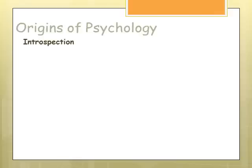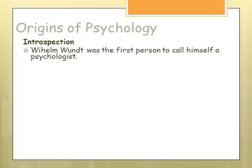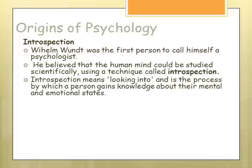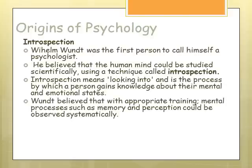Origins of psychology. Introspection was when psychology started to emerge, developed by Wilhelm Wundt, who was the first person to call himself a psychologist. He believed that the human mind could be studied scientifically and developed the technique of introspection — when a person looks into their own processes to gain knowledge about their mental and emotional states. With appropriate training, these processes could be observed systematically, and this systematic method is where psychology started to become more scientific.